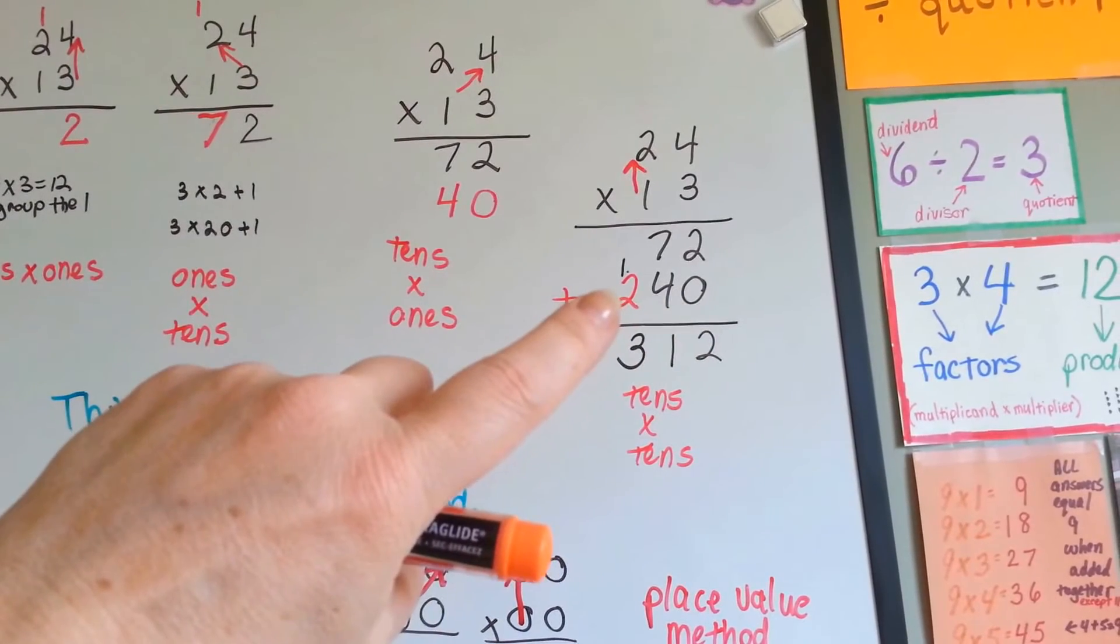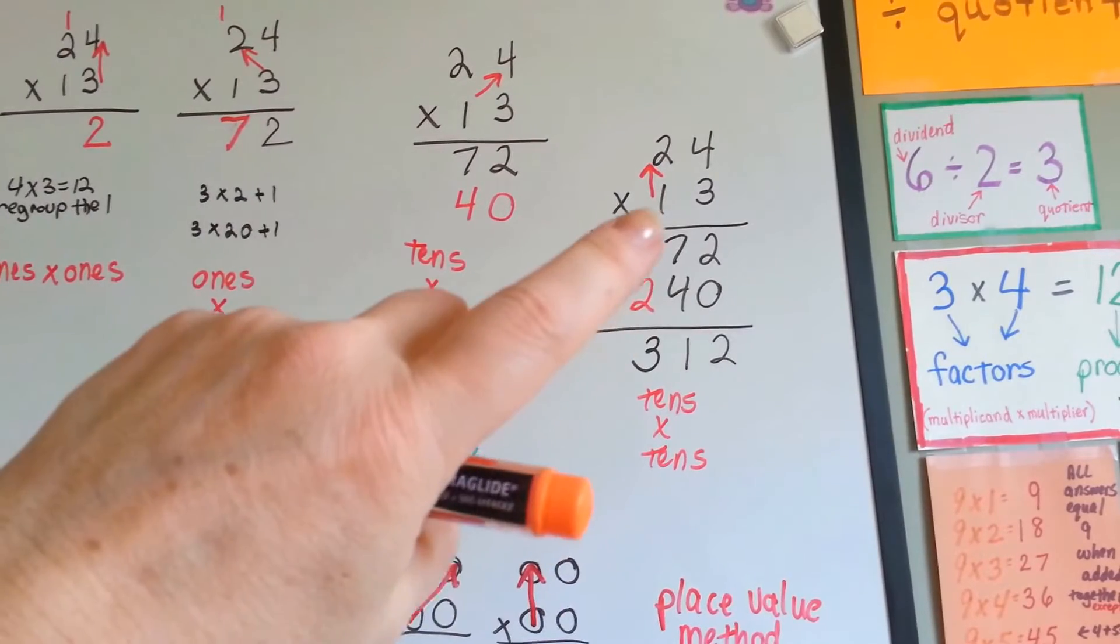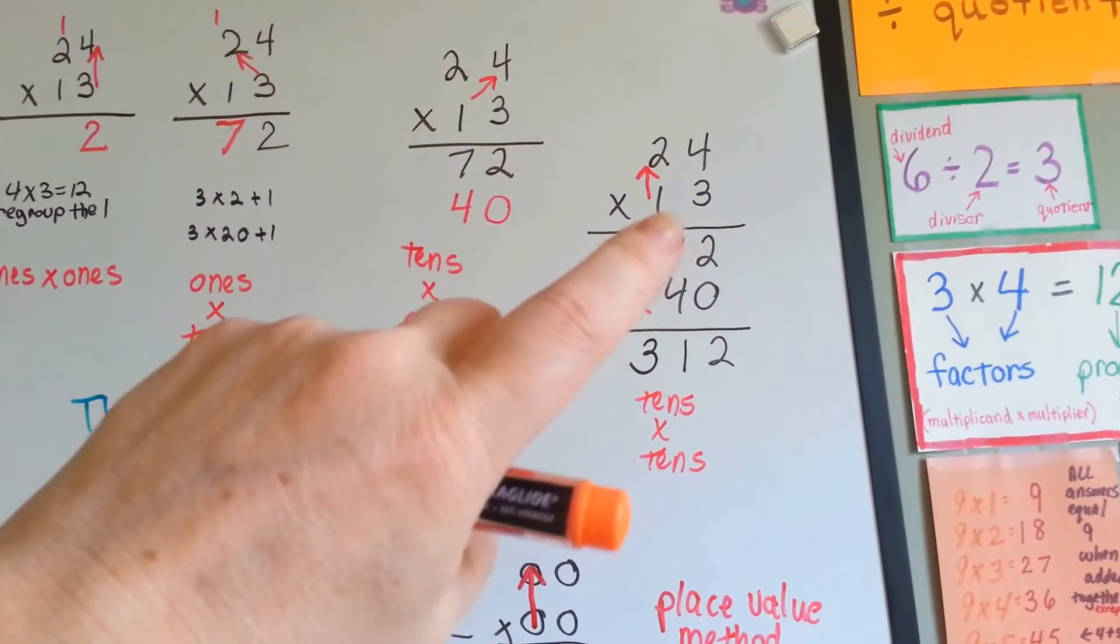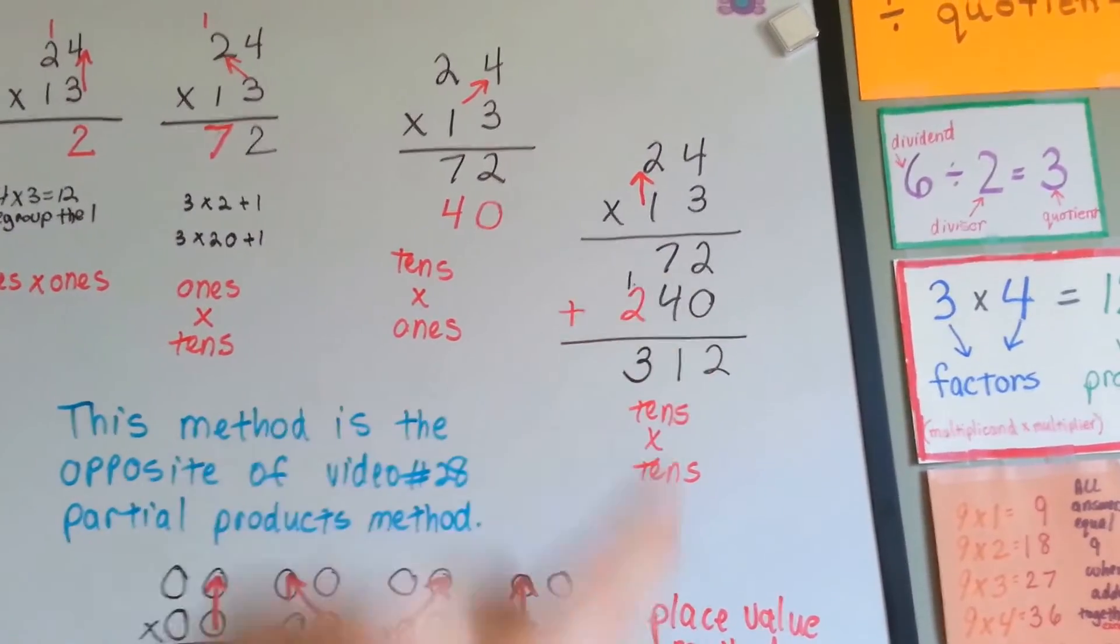1s, tens, hundreds. Then, now that we've got the 3 multiplied to the 4 and to the 2, and the 1 multiplied to the 4 and to the 2, we're going to add them all up.